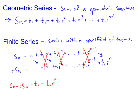Well, to solve this, we want to solve for SN. So, we factor out an SN, and we get 1 minus R equals T1 minus T1R to the N, all over 1 minus R. So, finally, we factor out the T1, and we end up with this nice formula. And this formula will always find us the sum of a geometric sequence that is finite.